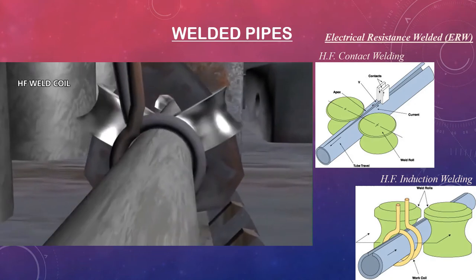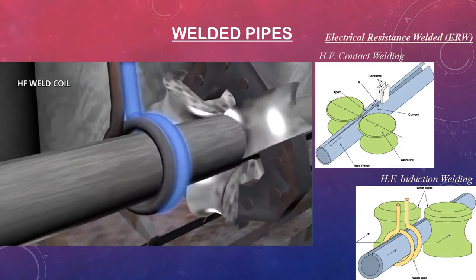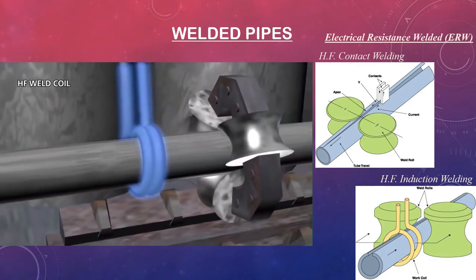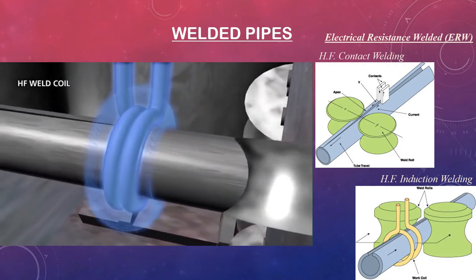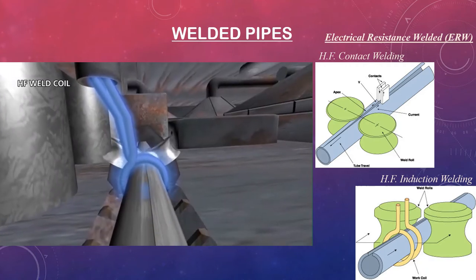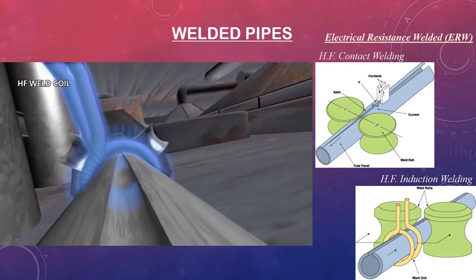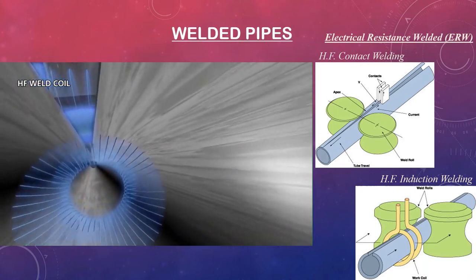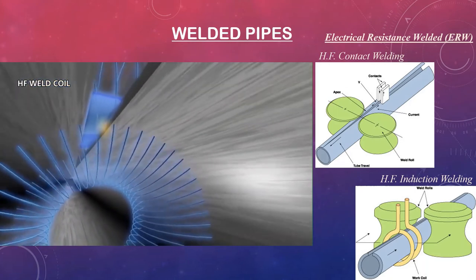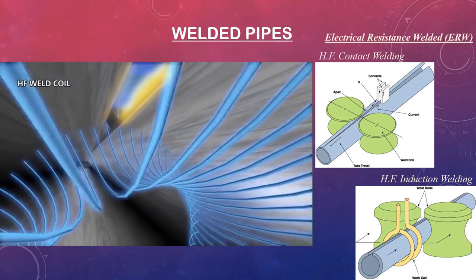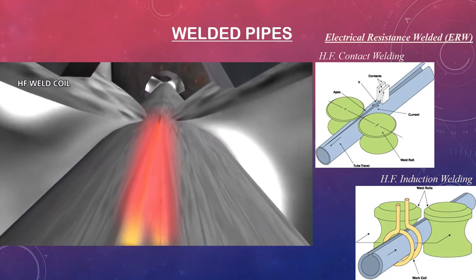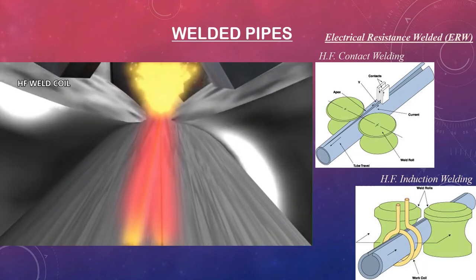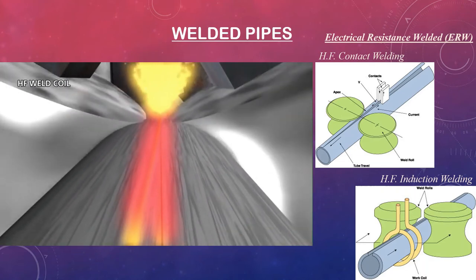In high-frequency induction welding, the weld current is transmitted to the material through a work coil in front of the weld point. The work coil does not contact the pipe; instead, the electrical current is induced into the pipe material through magnetic fields that surround the pipe. High-frequency induction welding eliminates contact marks and reduces the setup required when changing pipe size.